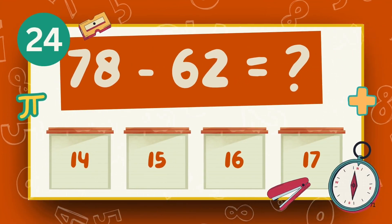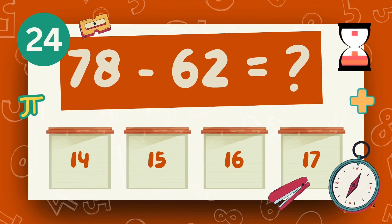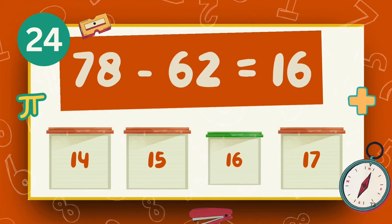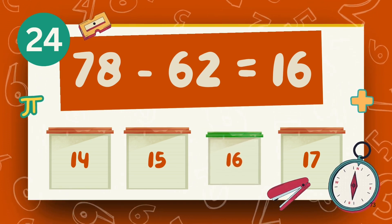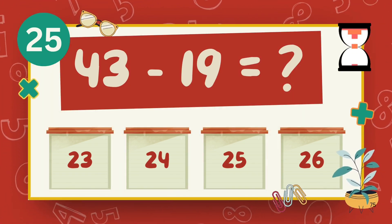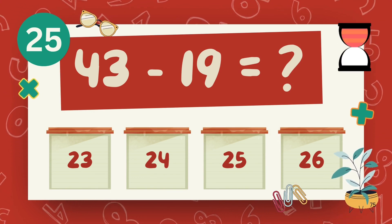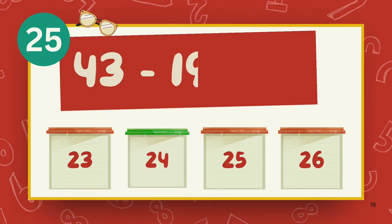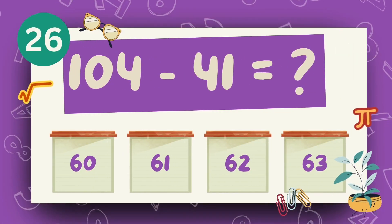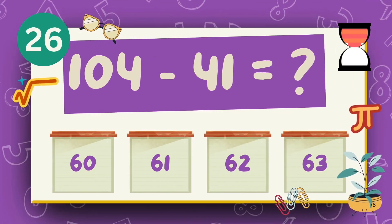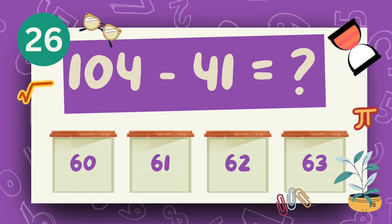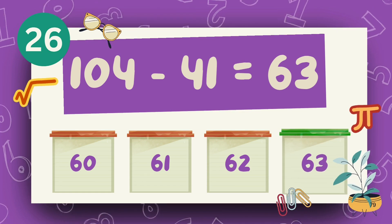What is 78 minus 62? The answer is 16. What is 43 minus 19? The answer is 24. What is 104 minus 41? The answer is 63.